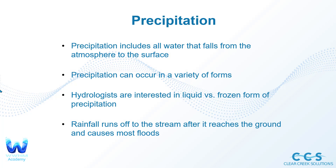What is precipitation? Precipitation includes all water that falls from the atmosphere to the surface. Recall the hydrologic cycle — water is evaporated from large water bodies or evapotranspirated from vegetation, returns to the atmosphere, and then falls as precipitation. Precipitation can come in a variety of forms, and hydrologists are mostly interested in the liquid versus frozen form.